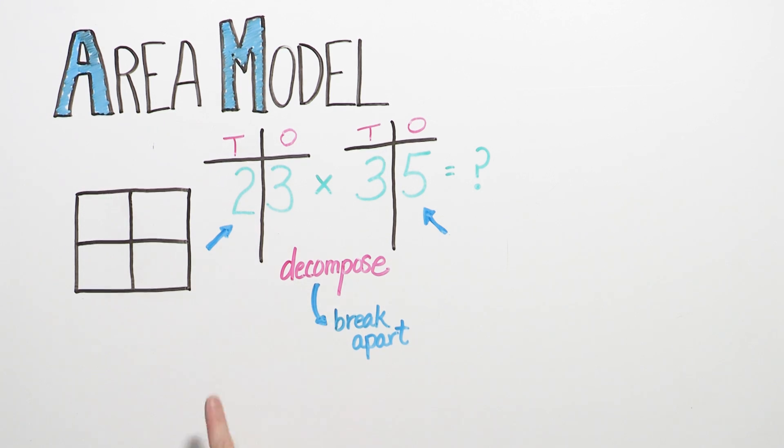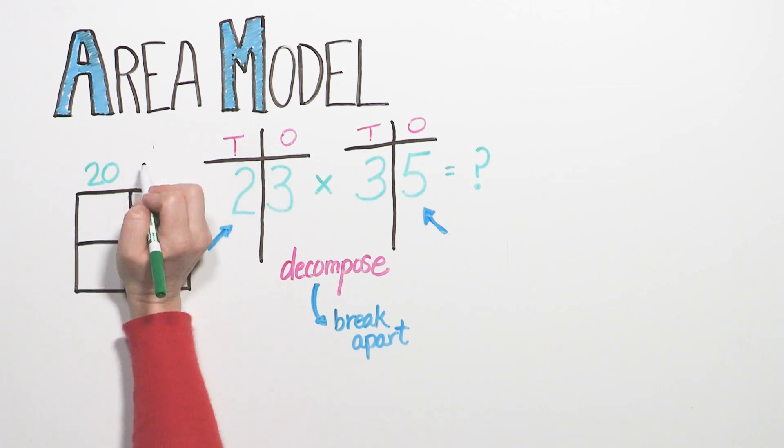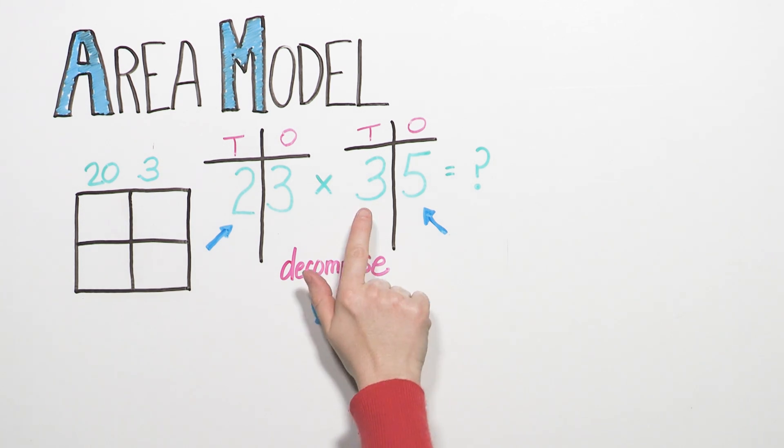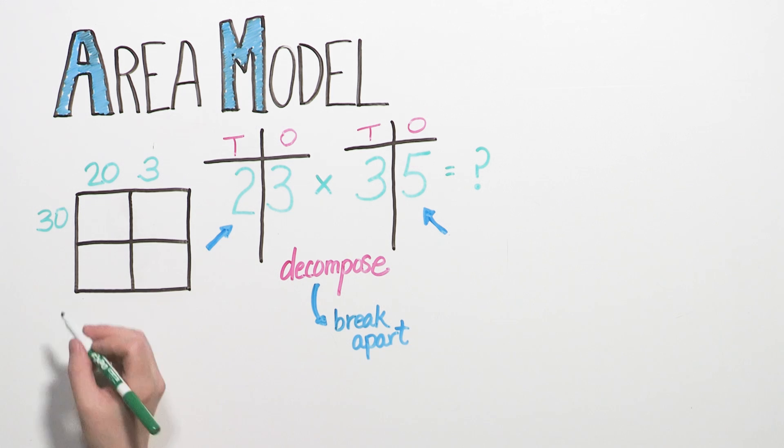The value of 2 tens is 20. The value of 3 ones is 3. 3 tens is 30. And 5 ones is 5.